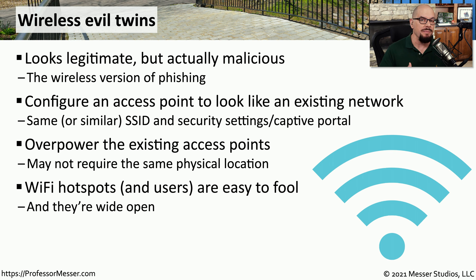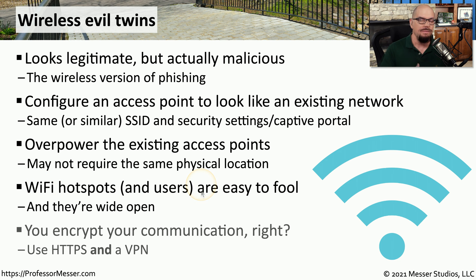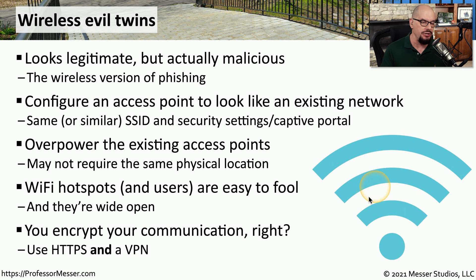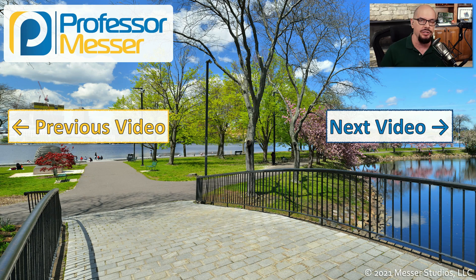Wireless evil twins can be very easy to implement on open networks, especially open Wi-Fi hotspots or other public areas. If you do make the mistake of connecting to a wireless evil twin, you could still prevent it from gathering any information from your system by encrypting all of the communication. This means that you should always be connected on a wireless network through a virtual private network, or at a very minimum, make sure that you're always using HTTPS.